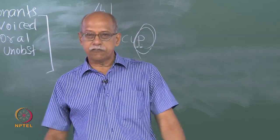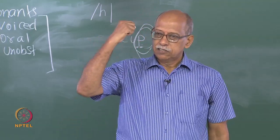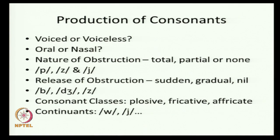There can be three different kinds of release of obstruction: sudden release, gradual release, or in rare cases no release at all — and even then we get a speech sound. Taking all of these things into account, phoneticians classify consonant sounds into many categories. There are plosive sounds, produced with complete closure and sudden release — 'ta,' 'da,' complete closure, sudden release.